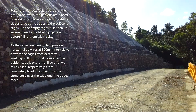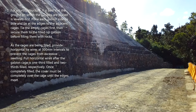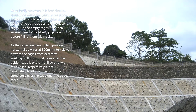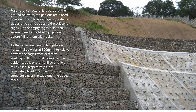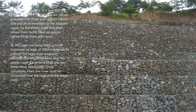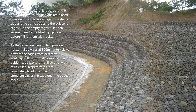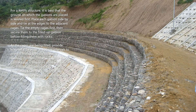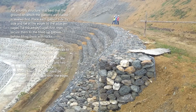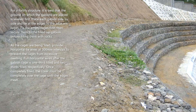For a fortified structure, the ground on which the gabions are placed should be leveled first. Place each gabion side by side and tie at the edges to the adjacent cages. Tie the empty cages first, then secure them to the filled gabion before filling them with rocks. As the cages are being filled, provide horizontal tie wires at 300 mm intervals to prevent excessive swelling. Pull horizontal wires after the gabion cage is one third filled and two thirds filled respectively. Once completely filled, the cover must be folded completely over the cage until the edges meet.